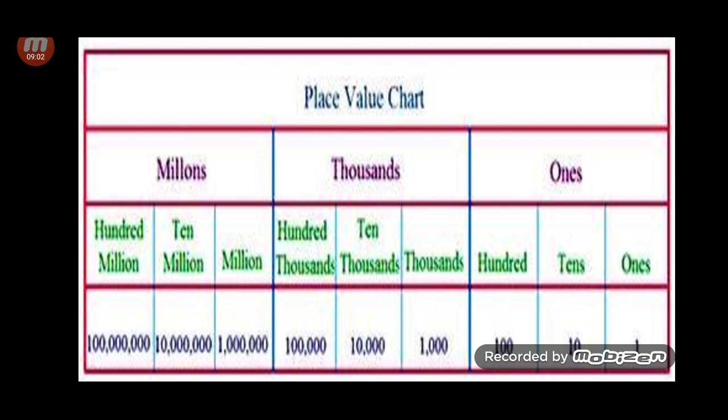Once again, the complete international place value sequence is: ones, tens, hundreds, thousand, ten thousand, hundred thousand, million, ten million, hundred million — and afterwards billion, ten billion, and hundred billion.